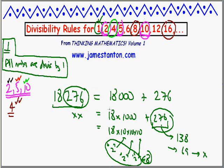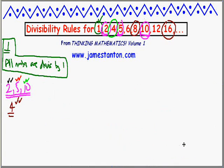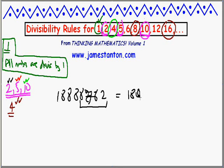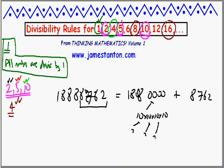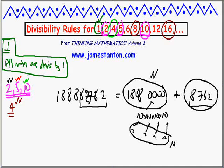The divisibility rule for 16 is very similar. Focus on multiples of 10,000: since 10,000 equals 10 times 10 times 10 times 10, it contains four factors of 2, making it a multiple of 16. So all you need to check is the final four digits — if they can be halved four times, the number is divisible by 16. Extending the pattern: divisible by 32 means checking the final five digits; divisible by 64 means checking the final six digits, and so on.